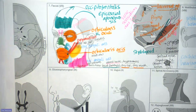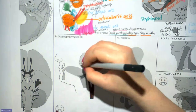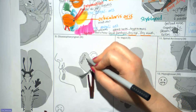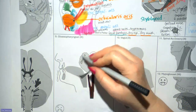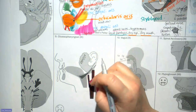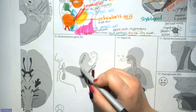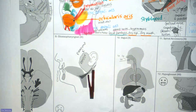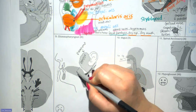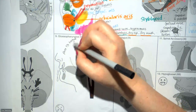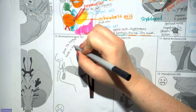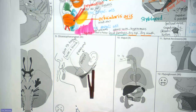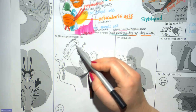Cranial nerve nine is the glossopharyngeal. The parotid gland — the largest salivary gland — is supplied with parasympathetic innervation by the glossopharyngeal, telling it to secrete saliva. In addition, the glossopharyngeal supplies the posterior third of the tongue with both taste and touch sensation. So cranial nerve nine does both at the back of the tongue, whereas for the anterior two thirds, taste was done by the facial and touch by the trigeminal.